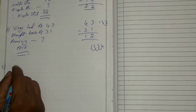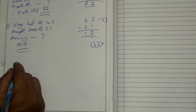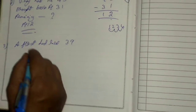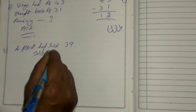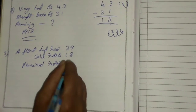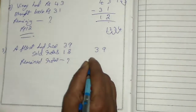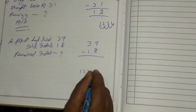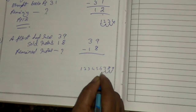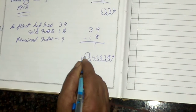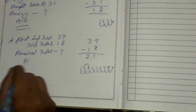Third sum: a florist had 39 roses. He sold 18 roses. How many roses remained? Had roses — 39. Sold roses — 18. Remained roses — we don't know. From 39 minus 18: 9 minus 8 — 1, 2, 3, 4, 5, 6, 7, 8 — count back — 1. 3 minus 1 is 2. Remaining roses is 21.